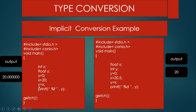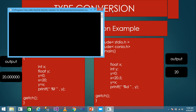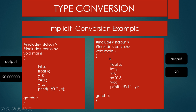X contains the value 20, and I am assigning this integer value into the float variable Y. So the compiler automatically converts the int value into a float value — this is implicit type conversion. The int value is converted into float and assigned to Y. When we print the value of Y using the print function, the output will be 20.000000.